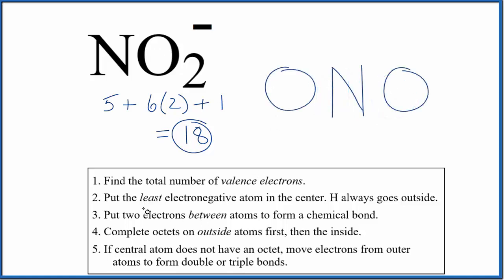Next, we're going to put two electrons, a pair of electrons between atoms. That's going to form the chemical bond. So we put two between the oxygen and nitrogen. That forms our chemical bond. We form another chemical bond.